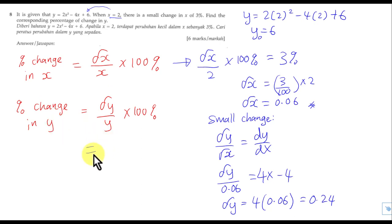Then I'm able to get the percentage change. This is 0.24, and this will be 6, and then we multiply 100%. I can just type everything into the calculator to get my final answer. You will get about 4% at the end. So this is the percentage change in Y.